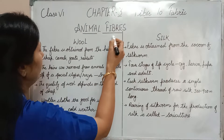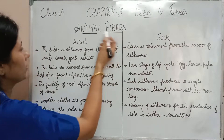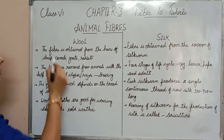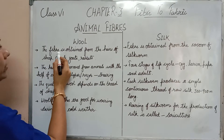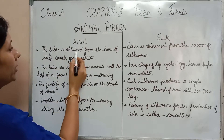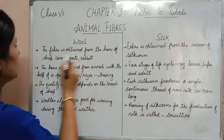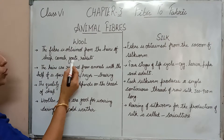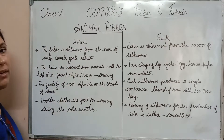Now, Animal Fibers. The first is wool. The fiber that is obtained from the hairs of sheep, camels, goats and rabbits.